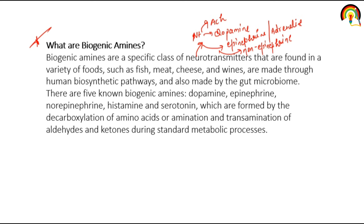There are five major biogenic amines: dopamine, epinephrine, norepinephrine, histamine, and serotonin. These are formed by the decarboxylation of amino acids — decarboxylation meaning removal of carbon dioxide — or by amination and transamination of aldehydes and ketones during standard metabolic processes. Biogenic amines are found in a variety of foods such as fish, meat, cheese, and wine, and are produced by various pathways including decarboxylation of amino acids and transamination of aldehydes and ketones.